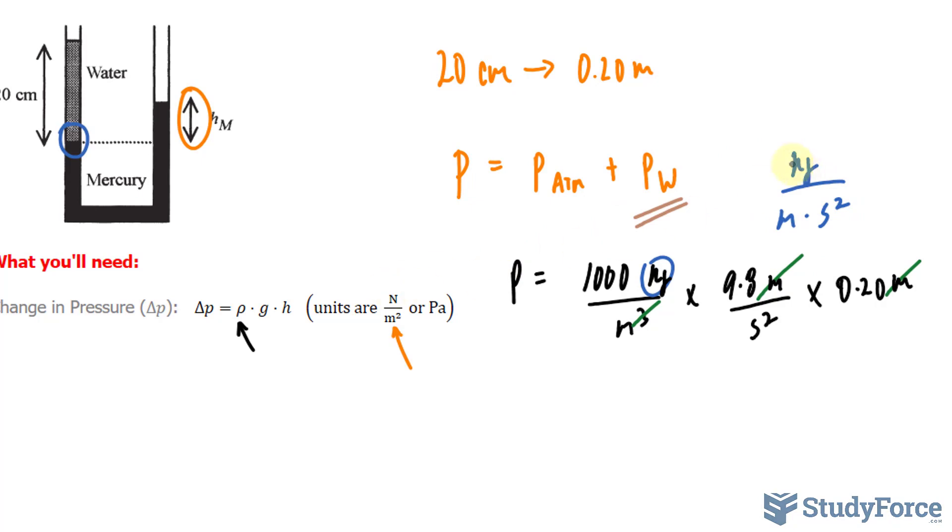Now notice that this is not matching with newtons per meter squared. 1 newton is kilograms times meters per second squared. This one doesn't even have a meters at the top. So what I could do is multiply the top and the bottom by meters.